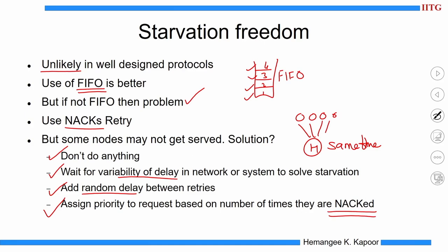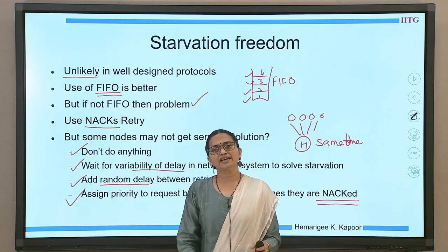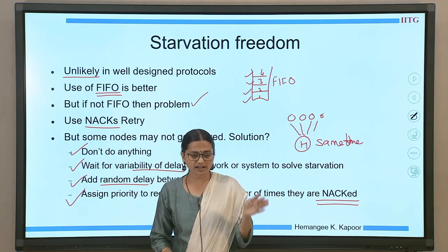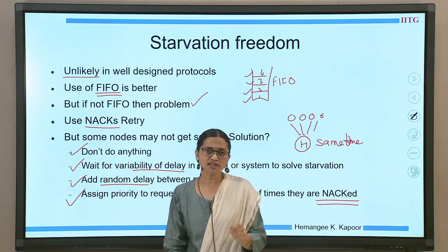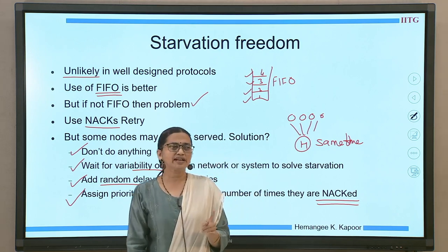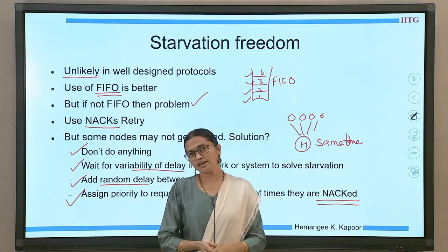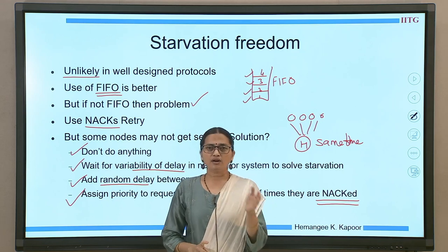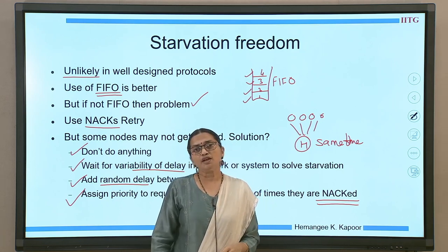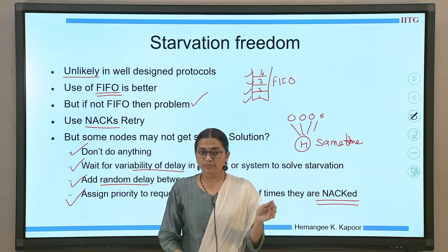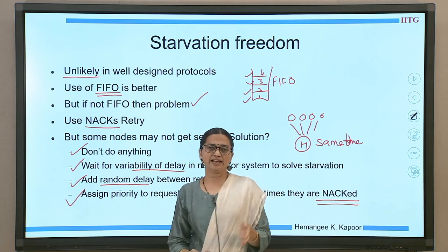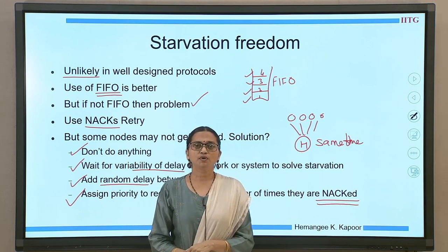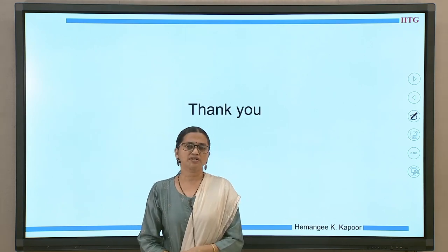We have now proved all correctness properties in a scalable cache-coherent system: write serialization for coherence, write serialization for consistency, and deadlock, livelock, and starvation freedom. With this we have completed the correctness aspects of scalable protocols and finished this module. Thank you so much.